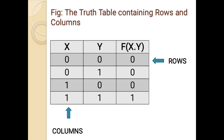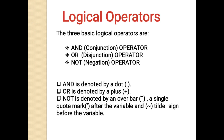This figure shows a truth table which contains four rows and three columns. All the horizontal lines are rows and all the vertical lines are columns. X and Y are the two input variables and F is the output variable, in which we find the product of X and Y — that is X dot Y. The dot indicates the AND operator, which is logical multiplication. There are four rows because there are two input variables, so rows equal 2 to the power 2, which equals 4.